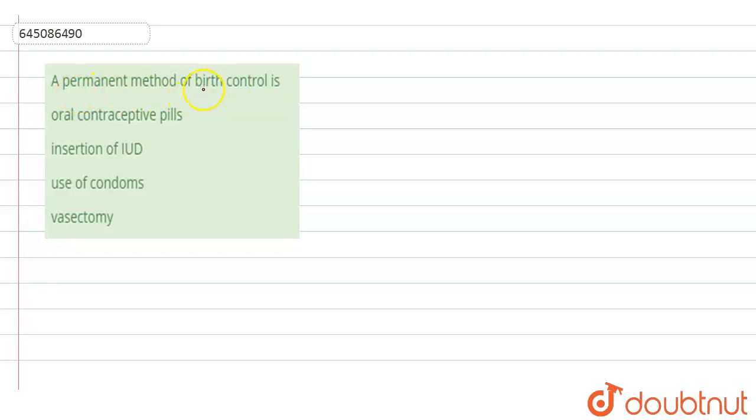The question here is: a permanent method of birth control is. This permanent method of birth control involves sterilization. Sterilization is done in male as well as female and it is done surgically. What are the options we have?